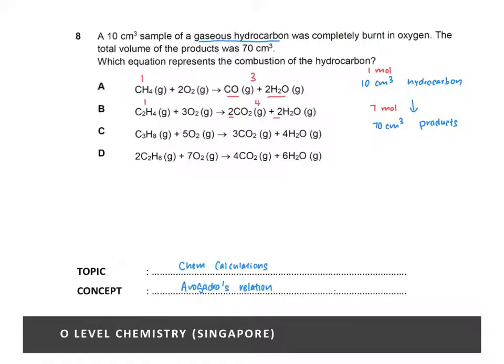And the correct option in C: one mole of your hydrocarbon produces seven moles of products. So this is the one where the ratio matches the one that's given in the question.